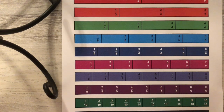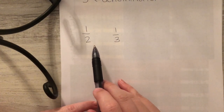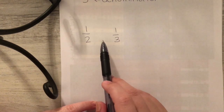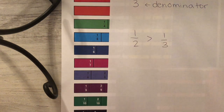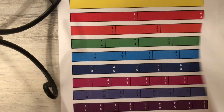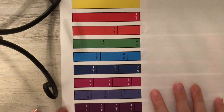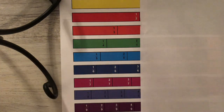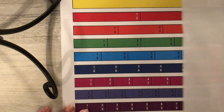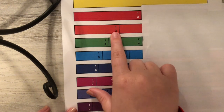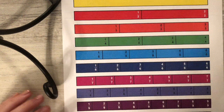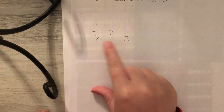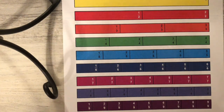So one half will be greater than one third. When comparing fractions, my brain might naturally say three is greater, so I think one third is greater. But not in fractions, because it's talking about pieces of a whole. I'd rather have half of the cookie than share it with three people. I can also see this on my fraction strips: if I put my blank sheet of paper on the one half line, everything I can see below that line is less than one half, and that includes one third.